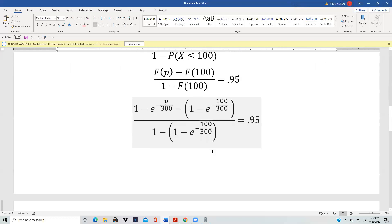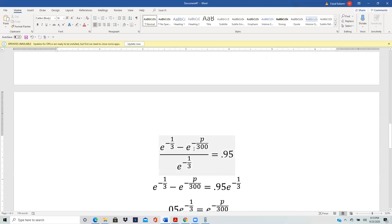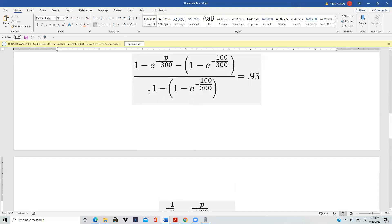And here, this one simplifies. Once you distribute this negative, the ones cancel out. And so you have e^(-1/3). This one minus e^(-P/300). And in the denominator, the ones cancel out and you just get e^(-1/3).